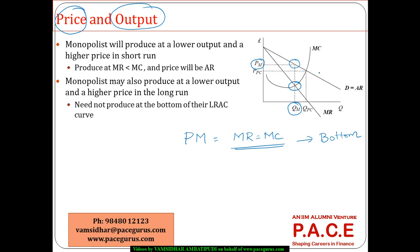In case of perfect competition, AR is the same as MR, which is the same as price. So the AR curve is the same as the MR curve in a perfectly competitive environment. MC cutting the MR gives us the perfect competition quantity, but the corresponding price is lesser compared to the monopoly. So the monopoly can traditionally charge a higher price compared to the perfectly competitive market, and quantity-wise, the monopoly can comfortably sell a lesser quantity.